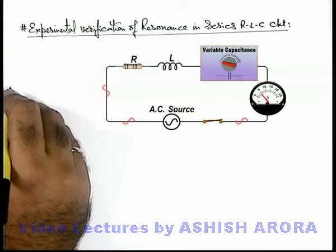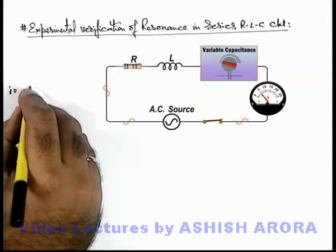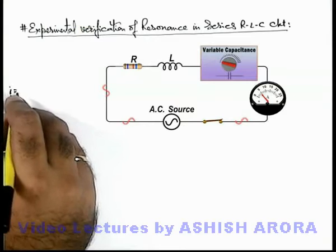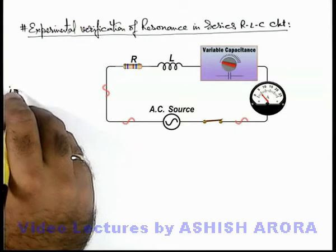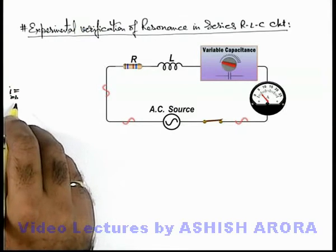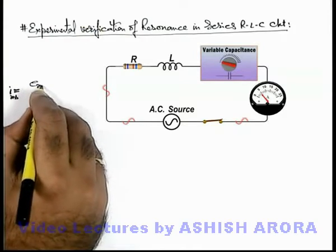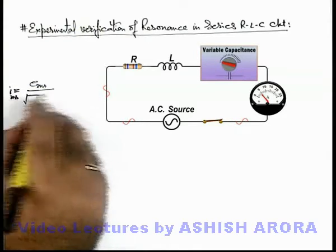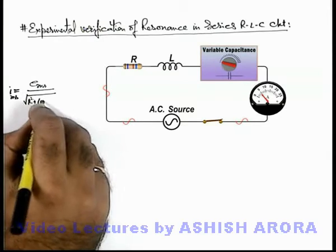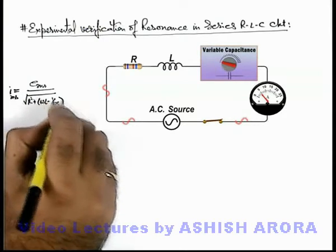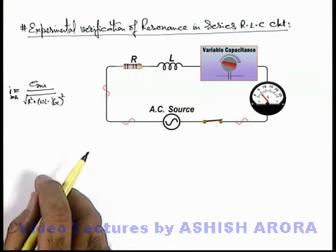Here we know the current in circuit is given as, if we talk about the RMS value, the AC ammeter always reads the RMS current in the circuit. That will be E_rms by root of R square plus (ωL minus 1 by ωC) whole square. This is the reading which is given by the ammeter.